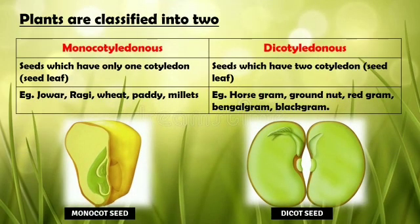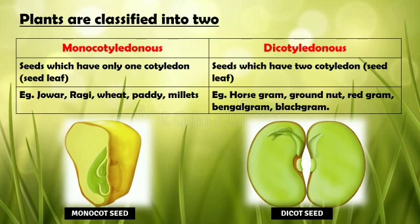Apart from lifespan, plants are also classified by the type of seeds they produce into monocotyledons and dicotyledons. Monocotyledon seeds have only one cotyledon, meaning only one leaf will sprout at first during germination. Examples include jowar, ragi, wheat, paddy, millets, etc. The picture shown is a monocot seed.